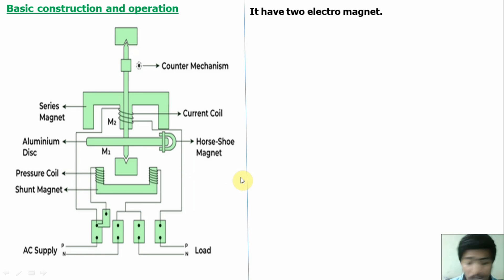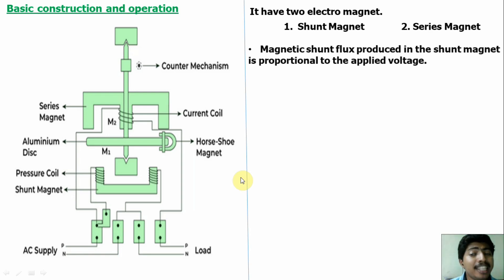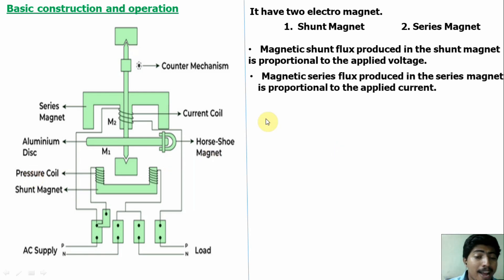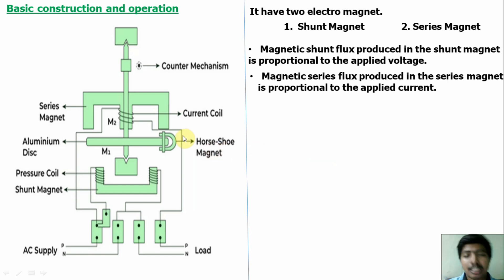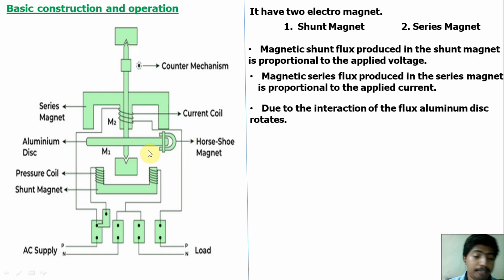It has two electromagnets. One is the shunt magnet and another one is the series magnet. The magnetic flux produced in the shunt magnet is proportional to the applied voltage. The flux produced in the series magnet is proportional to the applied current. So it has two fluxes: shunt flux depends upon the applied voltage, and series flux depends upon the current. Due to the interaction of the two fluxes, the aluminum disc will rotate.